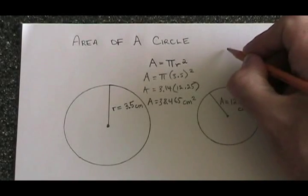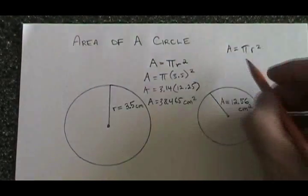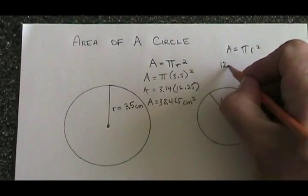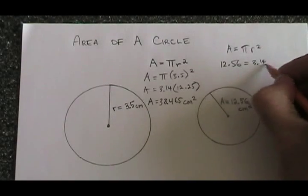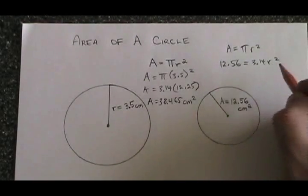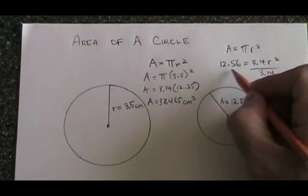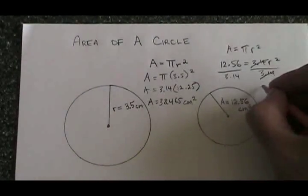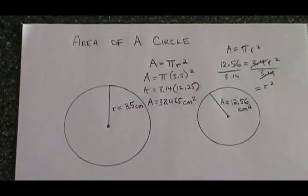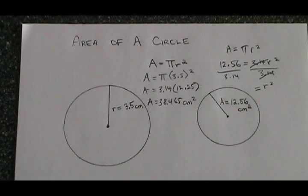Take the area formula again. Replace the A with 12.56 and replace the pi with 3.14. Algebra tells me to divide both sides of this equation by 3.14. This isolates r squared, and it equals 4.